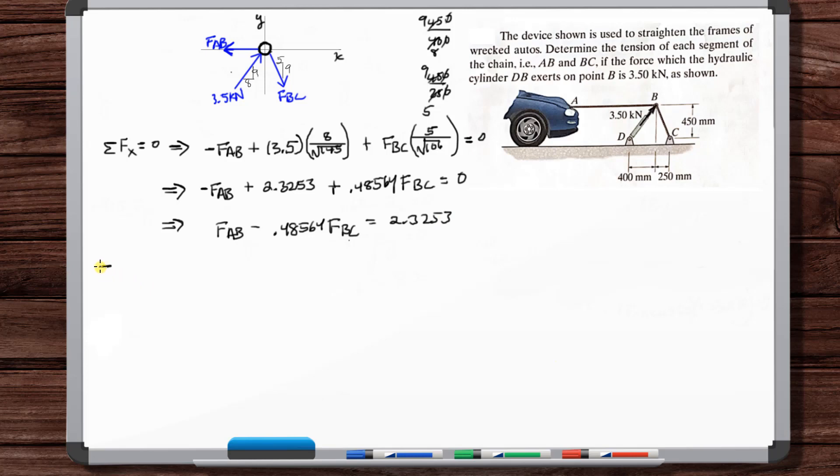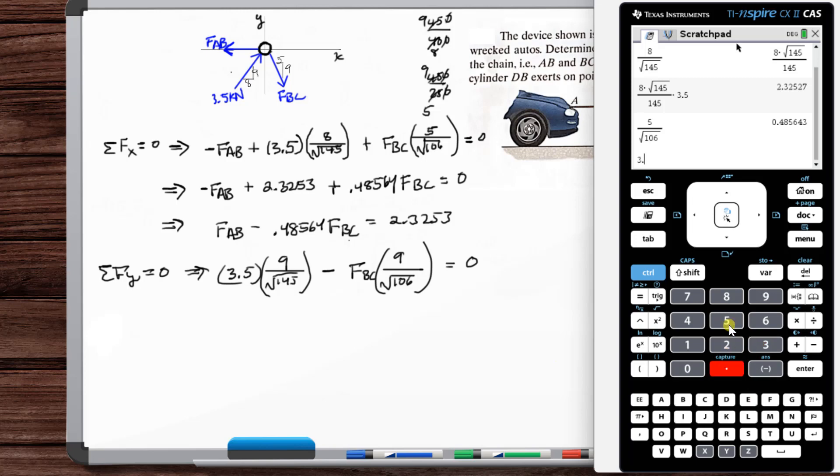Now let's sum the forces in the Y. So 3.5, positive 3.5, and then you see the square root of 145 with 9. And then minus F_BC and then square root of 106 and then 9 is equal to zero.